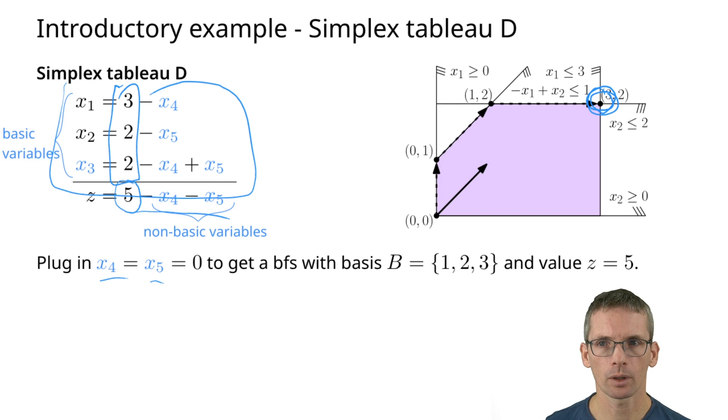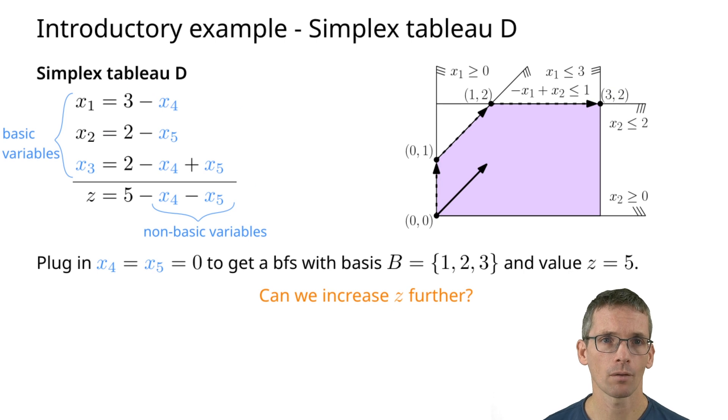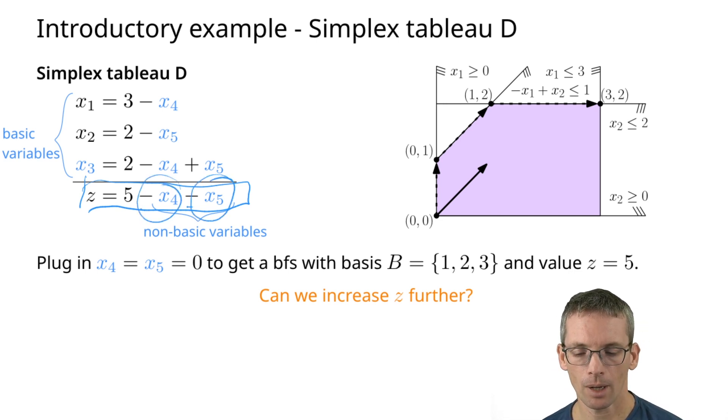Now the question is, can we do yet another pivot step? Can we increase our solution even further? For that it makes sense to look at z here. What we did so far, always, we took one of the variables that showed up positively and swapped it into the simplex tableau. Now these both show up negatively, with a minus sign. This means we cannot find a variable to swap in.